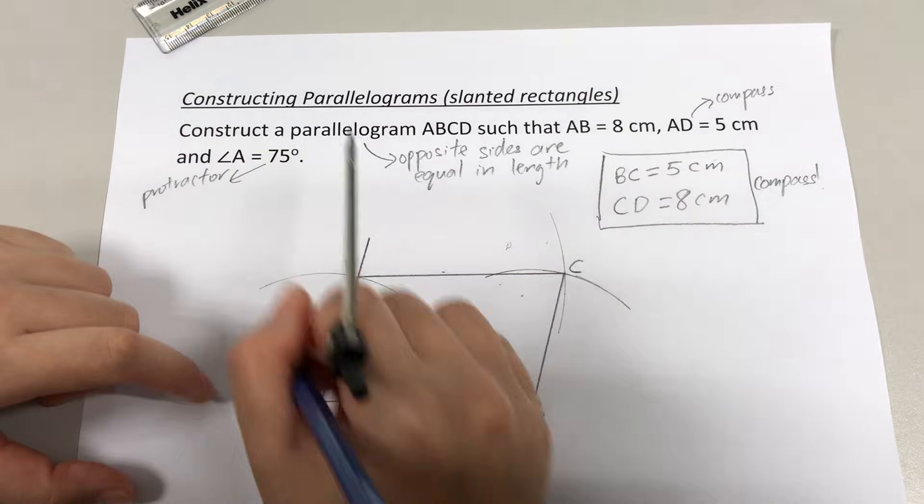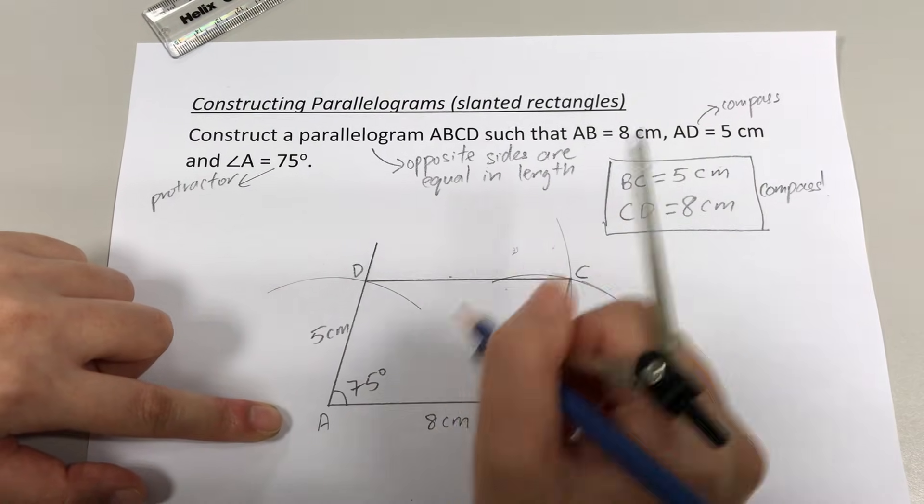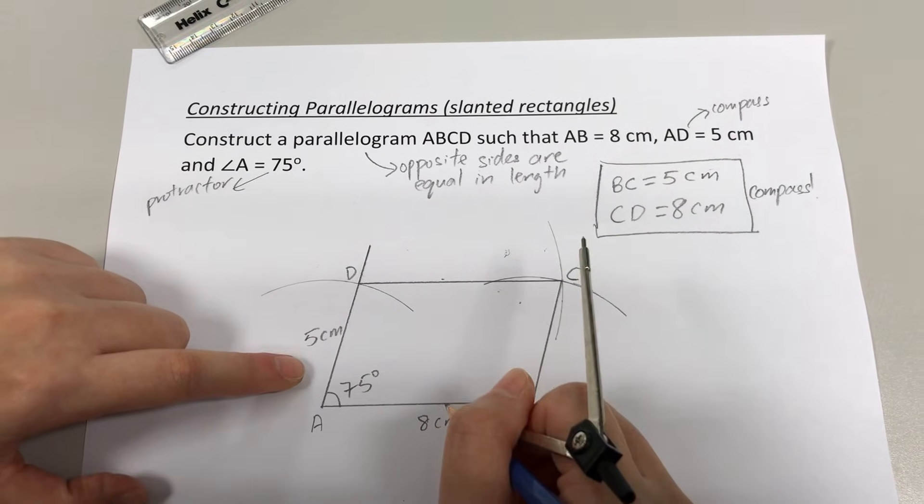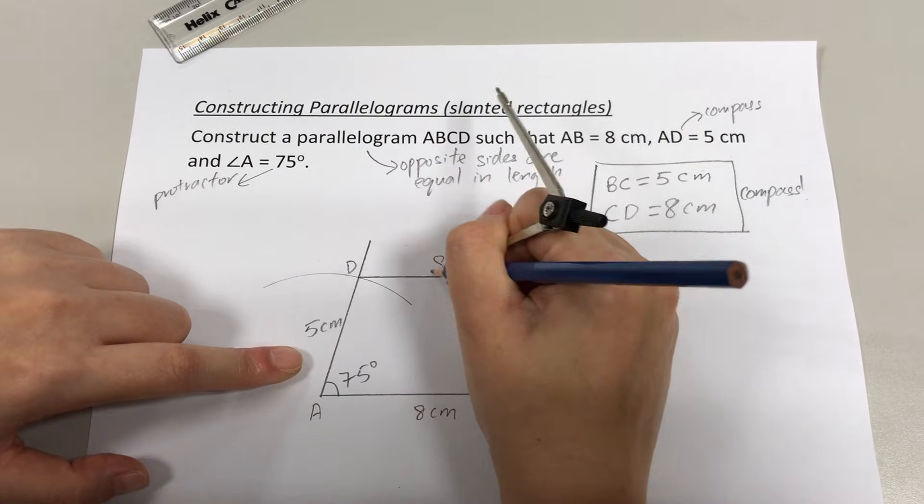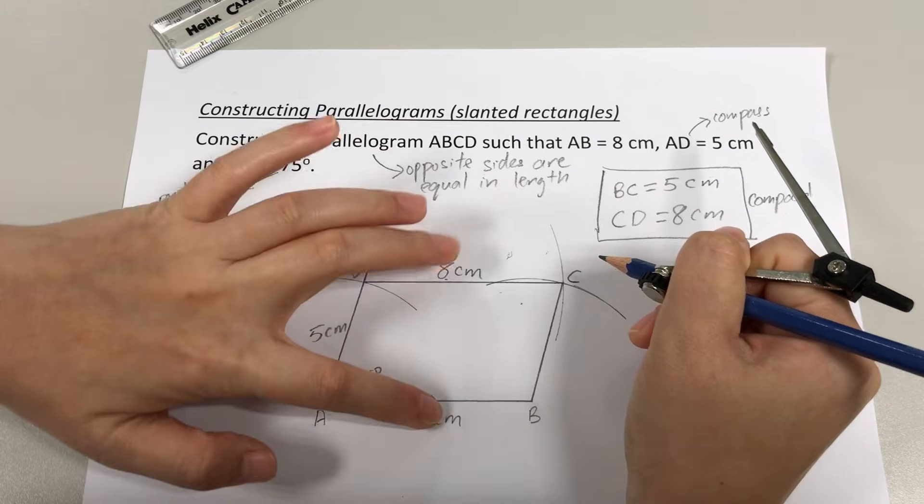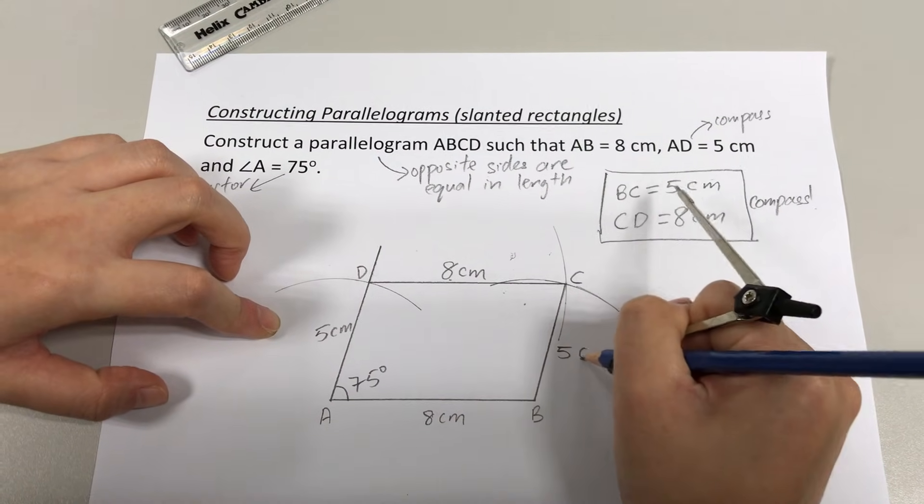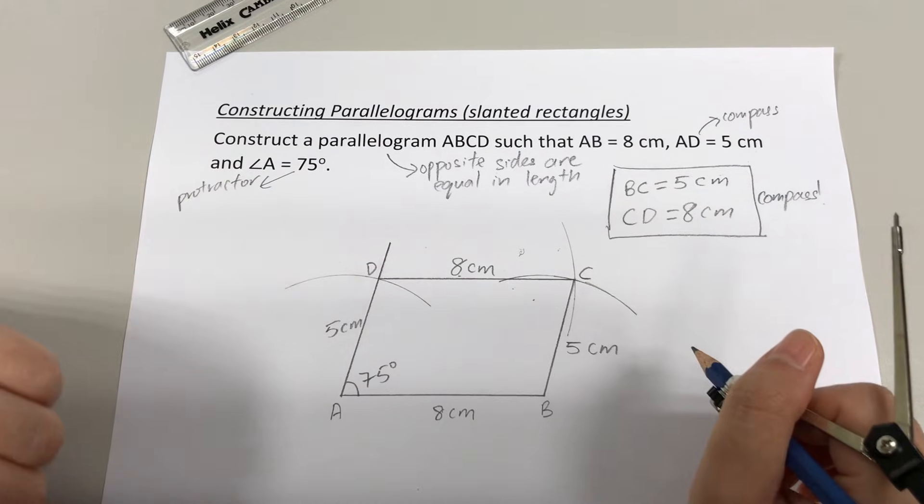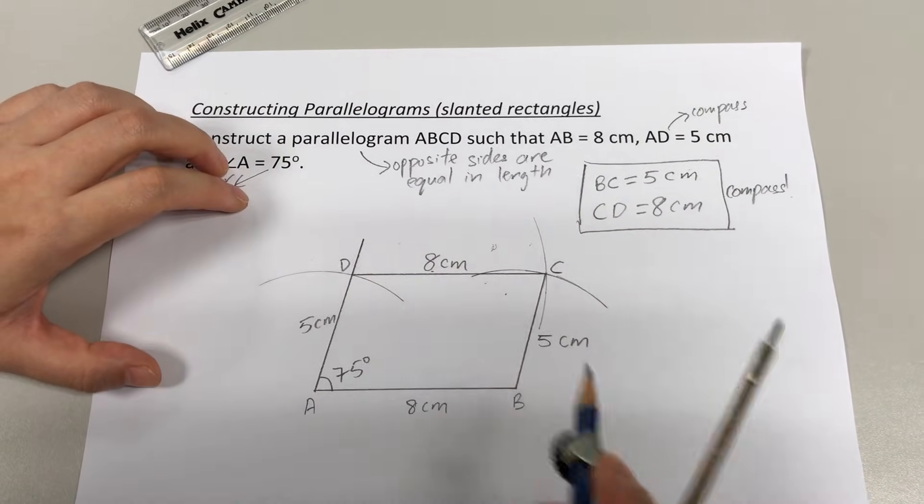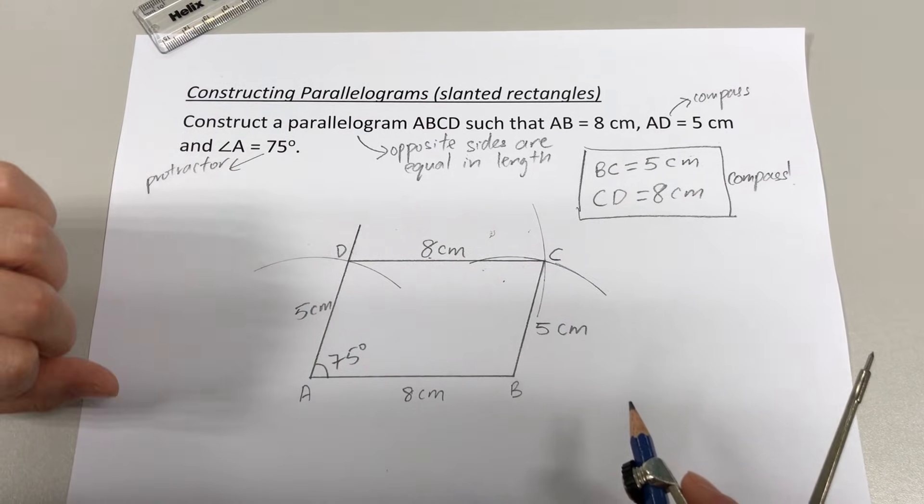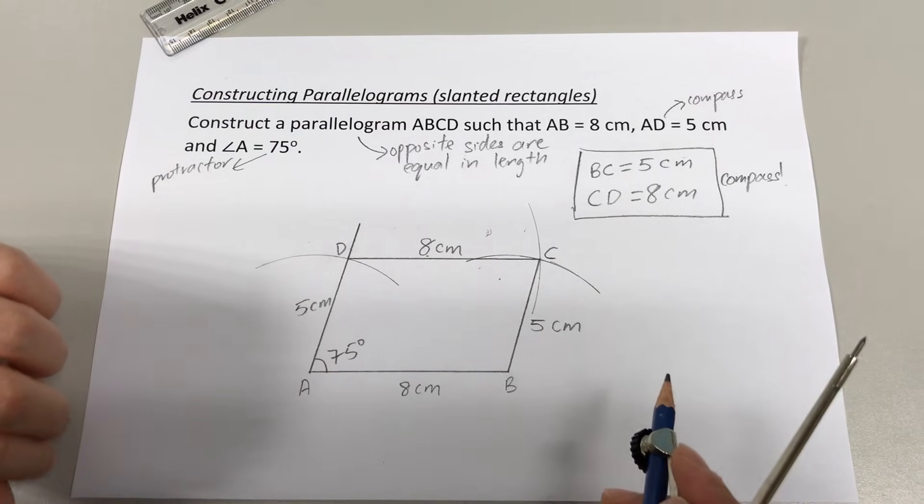Check that all your labels are complete. You have A, B, C, D, the 4 points labeled. The lengths and angles labeled. And because we are using the property of opposite sides being equal, you may label in 8 cm to show the opposite sides being equal in length, as well as the 5 cm for AD and BC that they are equal in length. Take note not to erase these curves that you have drawn with your compass, because you'll be awarded working marks to show your drawing using a compass.